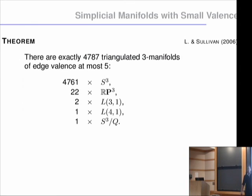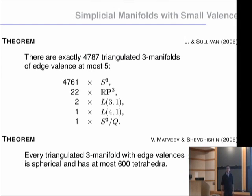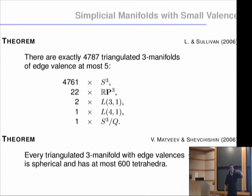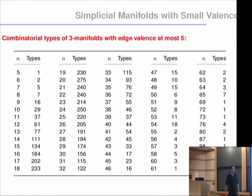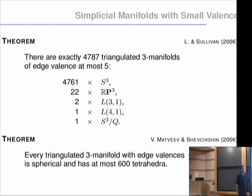The last one is called cube space, a quotient by the quaternion group, obtained with 15 vertices. Surprisingly, in the same year, Vladimir Matveev and Shifrin were able to show that every triangulated 3-manifold with edge valences at most five is spherical and has at most 600 tetrahedra — which would have given an upper bound for our program, though with no guarantee it would have stopped. They did that without a computer, using curvature and differential geometry.